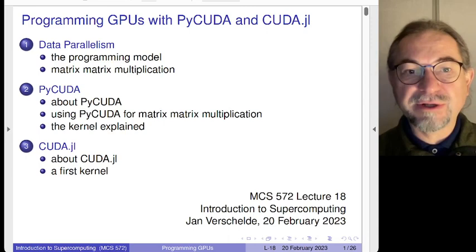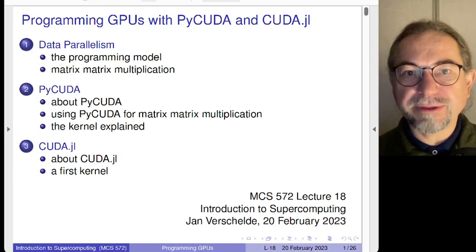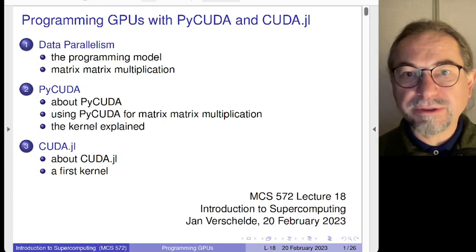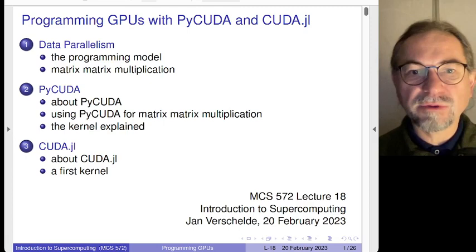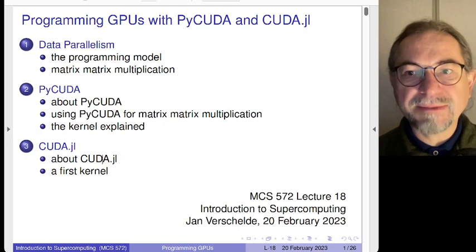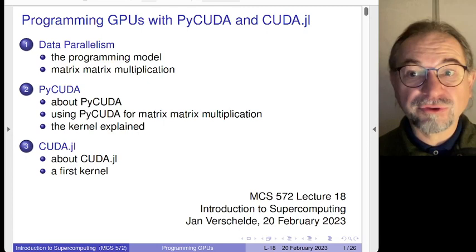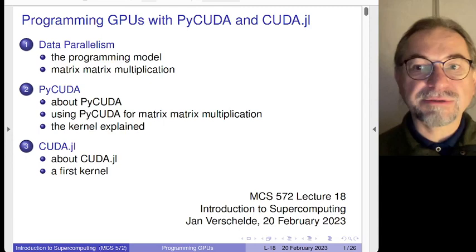Welcome to Lecture 18, the pre-recording of Lecture 18 of Introduction to Supercomputing. The topic of this lecture is how to program graphics processing units and how to do this from within Python or Julia. The environment I will be working in is CUDA, the programming environment from NVIDIA, the Compute Unified Device Architecture. In the last lecture, I explained the origin of this Unified - the graphics card can run in graphics mode, but it also can run in general programmers mode, suitable for scientific computing.